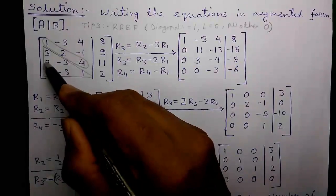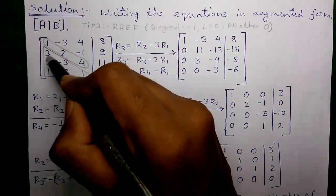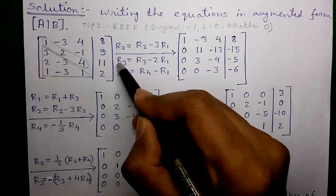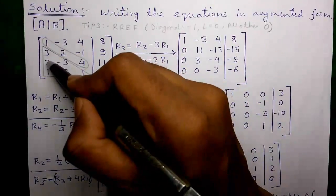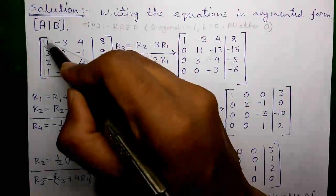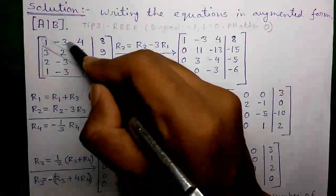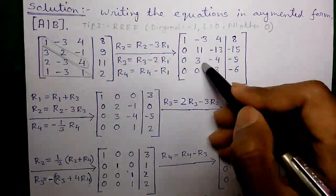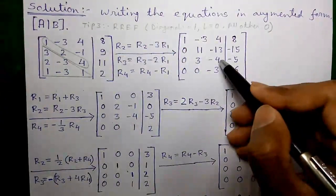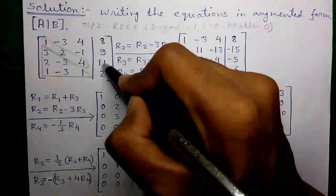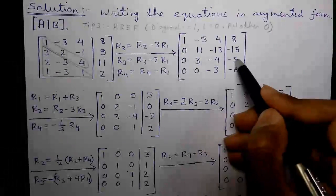Next, to get a zero at this position in row 3, we multiply row 1 by 2 and subtract: R3 = R3 − 2·R1. So: 2 − 2 = 0; −3 − (−3)×2 = +3; 4 − 4×2 = −4; and 11 − 8×2 = −5. This is our new row 3.